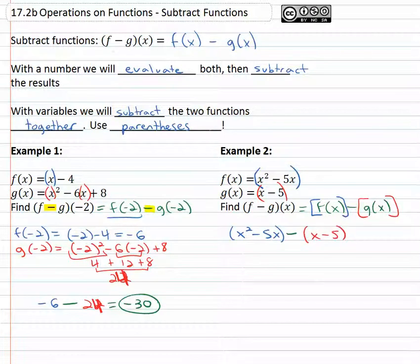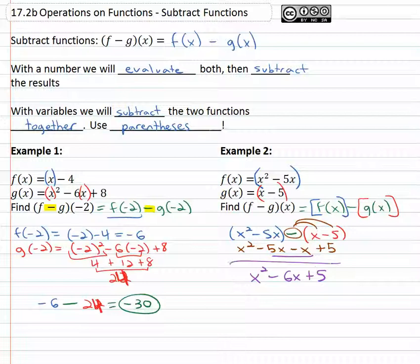Now we just have to simplify by distributing the negative through—that's a negative 1. Notice it goes through the entire parenthesis; that's why parentheses are important. x² − 5x − x + 5. That last term is where people get in trouble. Make sure that negative goes all the way through. Combine like terms and we get our final answer: x² − 6x + 5.